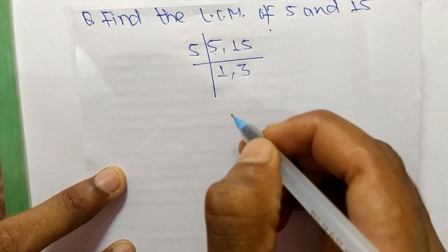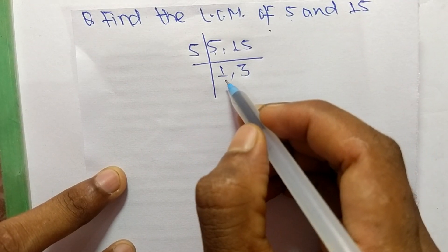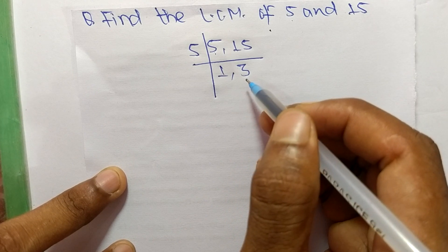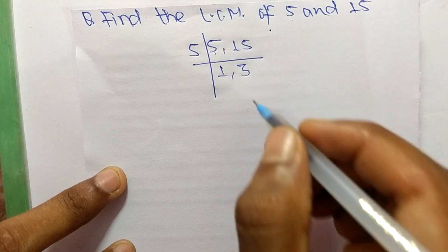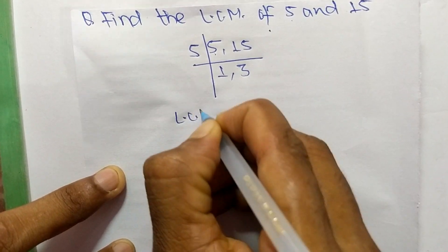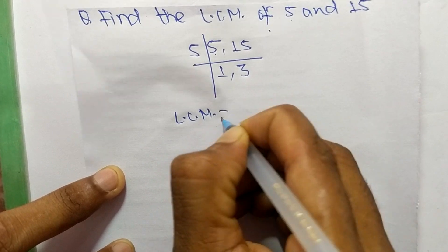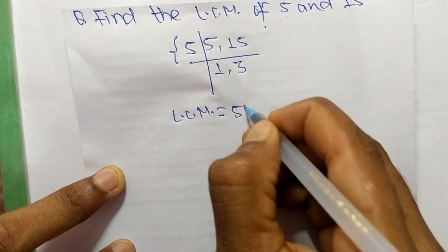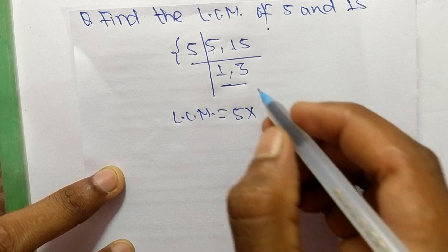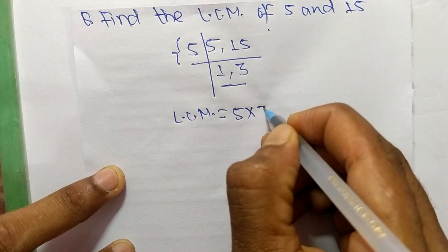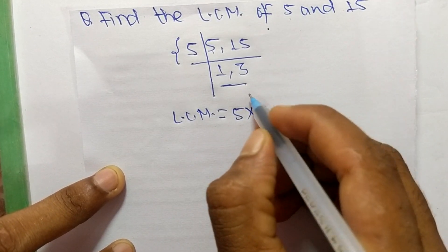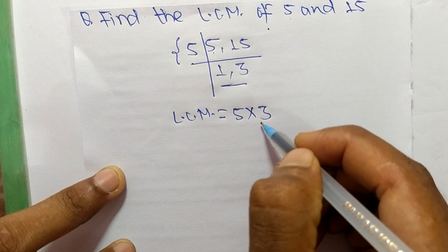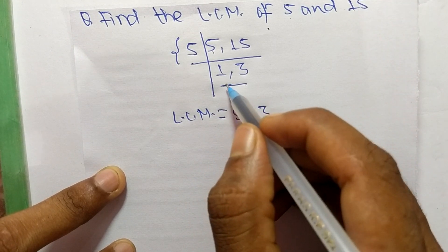Now we get 1 and 3, which are not exactly divisible by the same number. The LCM is equal to 5 from this part, and from this part we take only 3 and neglect 1, because multiplying any number by 1 gives the same result.